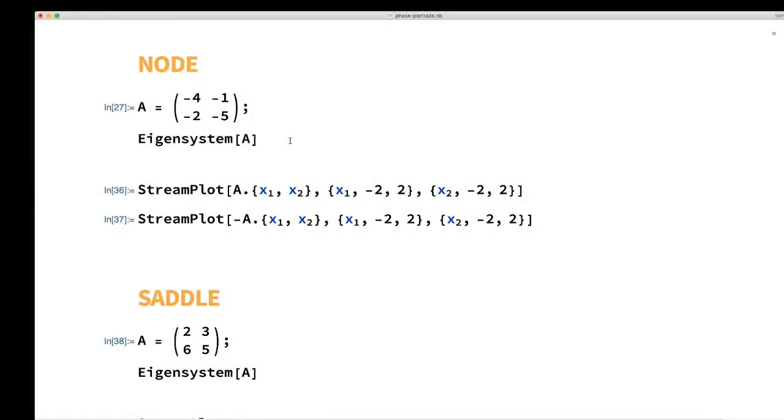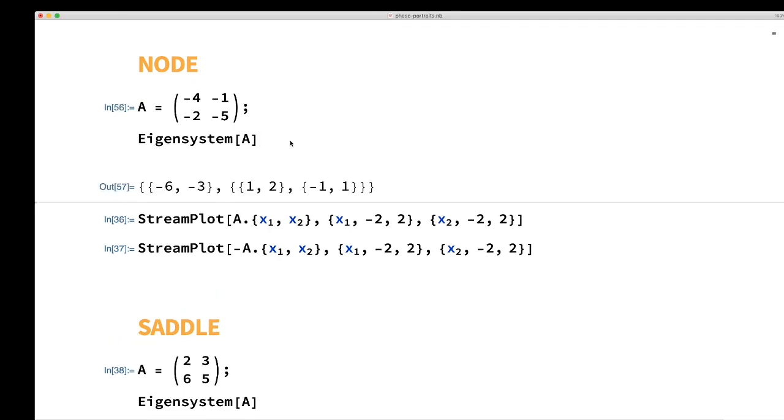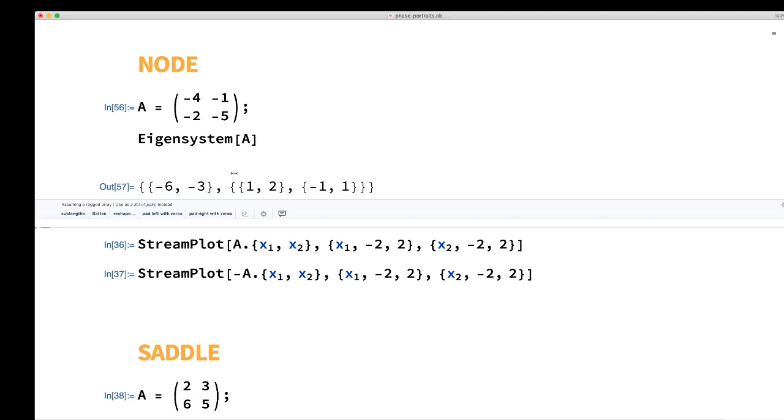It's easiest to look at phase portraits with the help of a computer. Here I'm using Mathematica. Here is a 2x2 matrix. It has eigenvalues negative 6 and negative 3. So this is going to be a stable equilibrium at the origin, and the type is going to be a node, because the eigenvalues have the same sign.